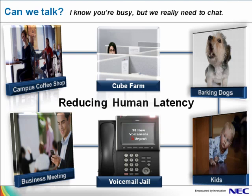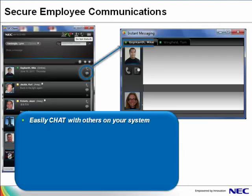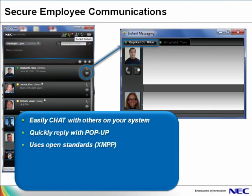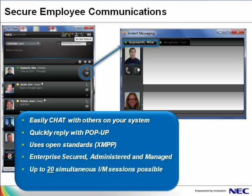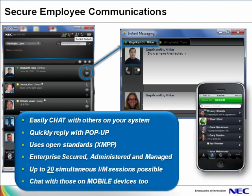This relates to buzz phrases we hear around like, how do we reduce human latency? The UC Client allows you to send secure instant messages to chat with other users on the system. UC Client uses the standards-based XMPP protocol to ensure openness, which allows you to send messages to users of other instant messaging applications. Once you open a chat session, it becomes independent of the UC Client, so you can control calls or even close the UC Client without interrupting your chat session. Up to 20 simultaneous chat sessions are possible, and it interoperates with the UC Mobile Client as well.